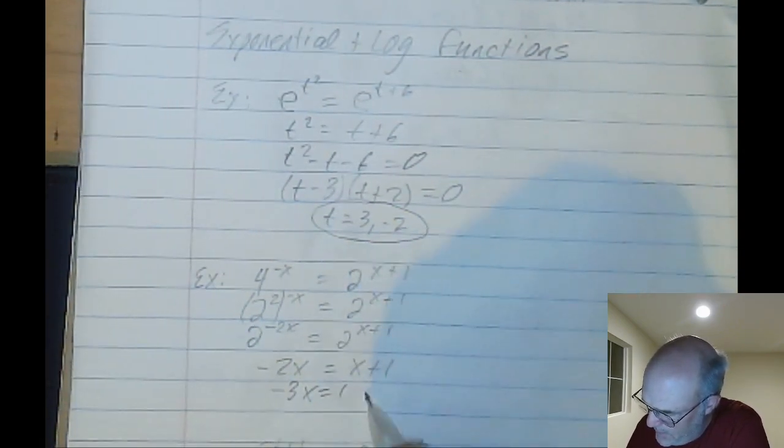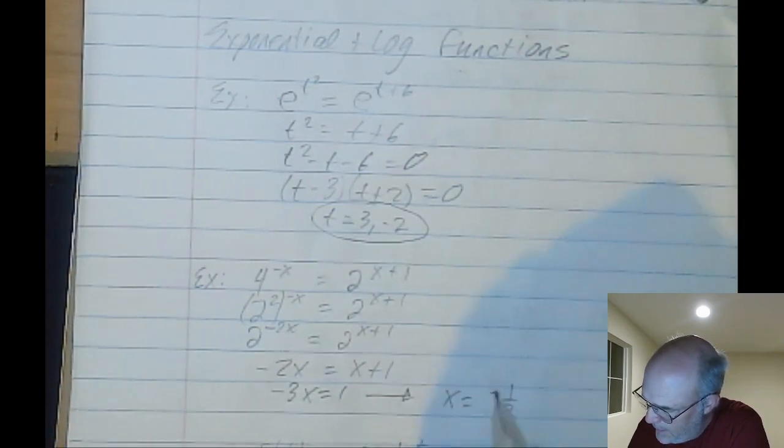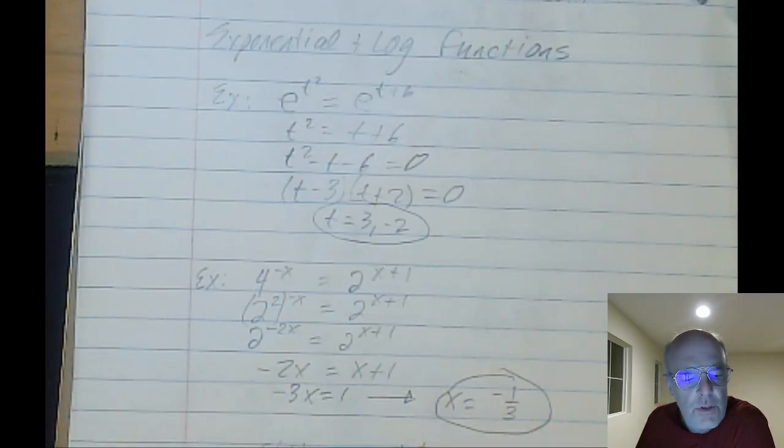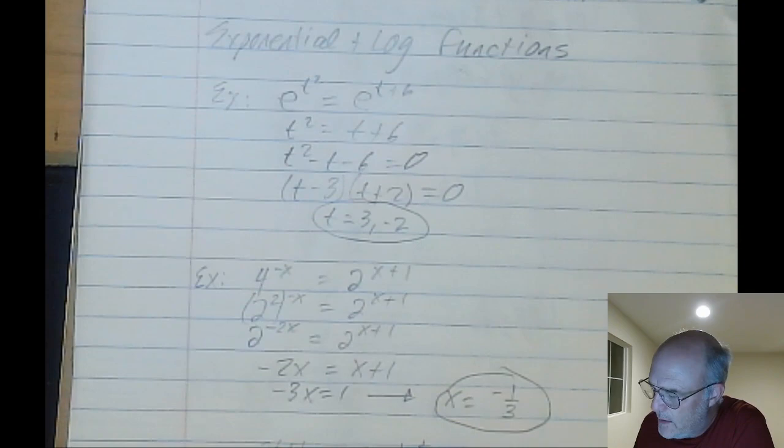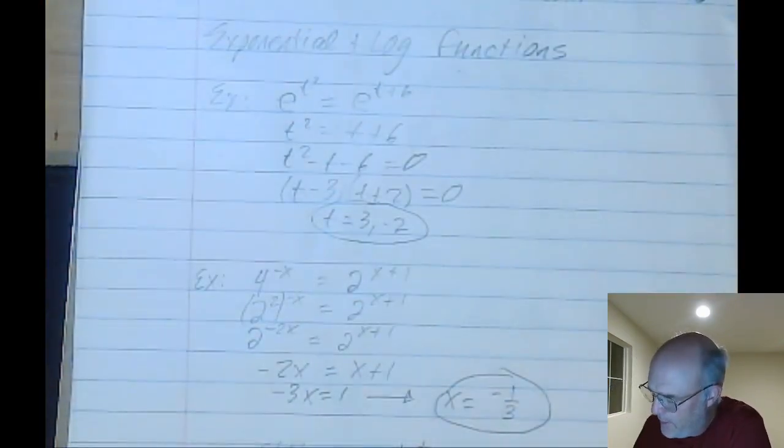And so we get x equals negative 1 third. You can see that pretty well. Let me know if it got better. Let me know tomorrow if it got better before I turned off that one line.